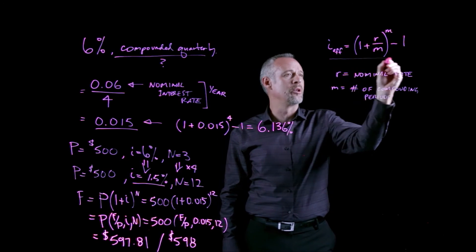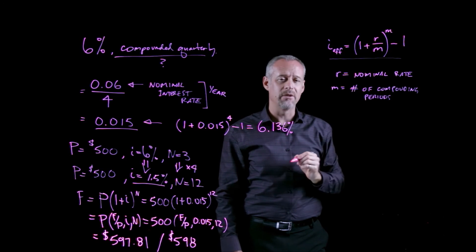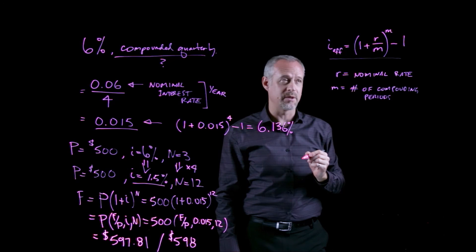So what is important in this formula is that you remember that the R in the formula is the nominal rate, and the M in the formula is the number of compounding periods in the year. So this becomes an important formula, and we use this quite a lot. You'll also find this on the inside front cover of most engineering economics textbooks.